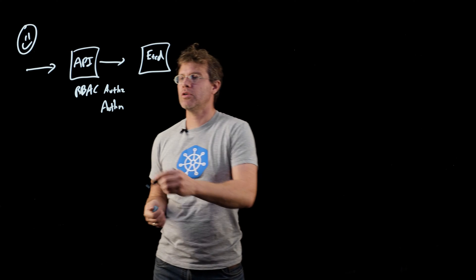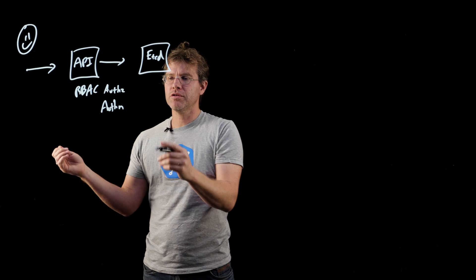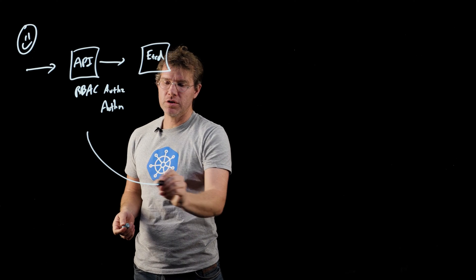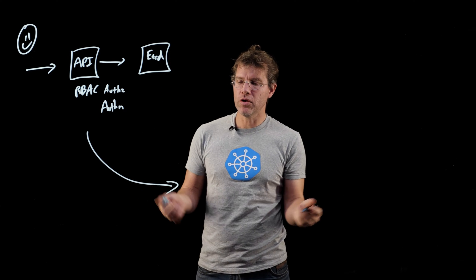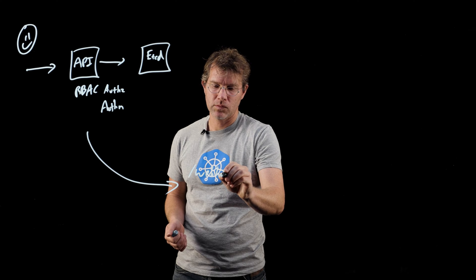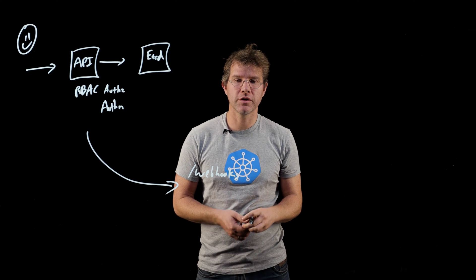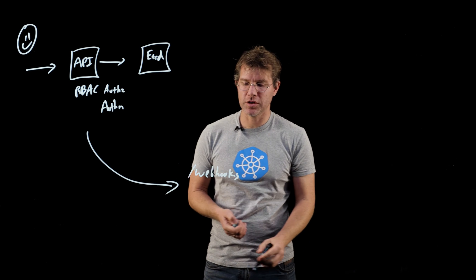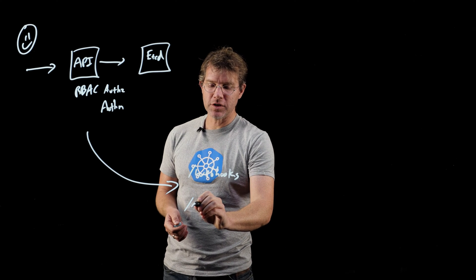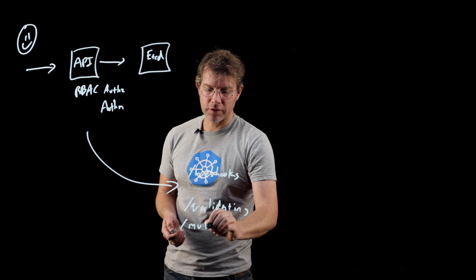So an admission controller is something that happens after our authN and authZ. After a user has been authorized, an admission controller is called, and those are usually webhooks so that you can dynamically register admission controllers. And there are two basic classes of admission controllers. There are validating admission controllers, and there are mutating admission controllers.